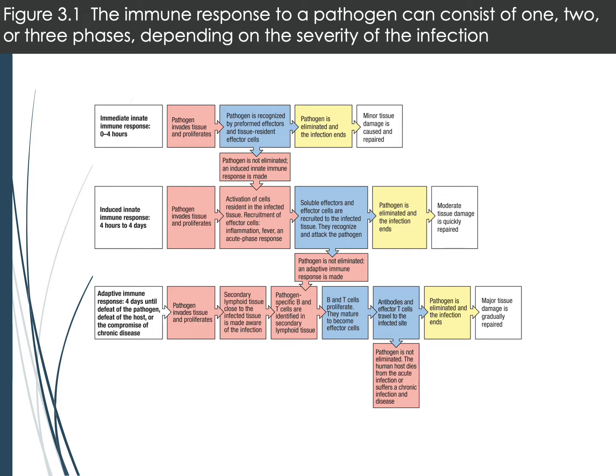This figure from the textbook provides an overview of the innate system, including adaptive immunity at the bottom. Starting at the top, there are immediate responses from the innate system. Upon exposure to a pathogen or foreign material, the innate system responds right away — pathogens can be recognized by effector cells or tissue-resident effector cells, such as innate cells found in different tissues or in circulation.